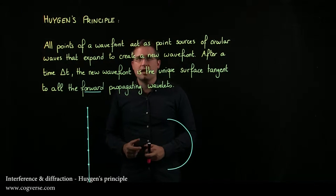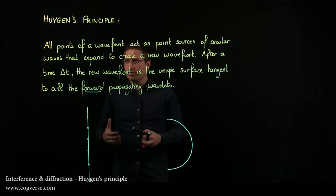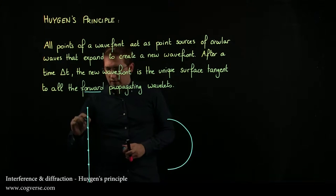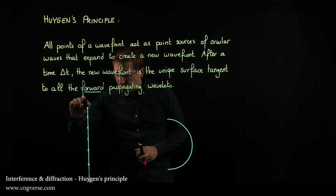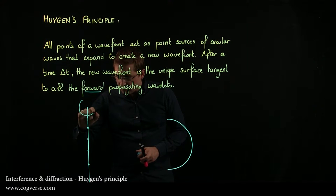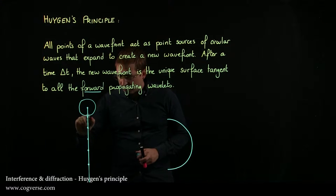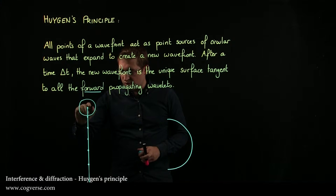Each point acts as a point source of circular waves that expand to create the new wavefront. That means that I'm going to draw a circular wave that expanded from this point. This acts as a source for circular waves.